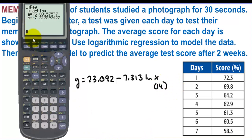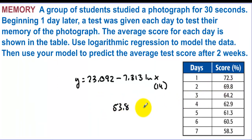We can go back. Well we are in the home screen. We got 73.092 minus 7.313 times the natural log of 14 days. And we get 53.79, 53.8, 53.8%.